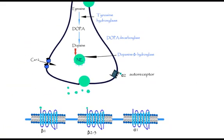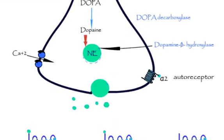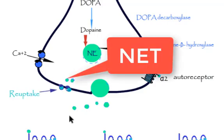Some norepinephrine is transported back to the cytoplasm of the varicosities by the norepinephrine transporter NET. This process is called reuptake.